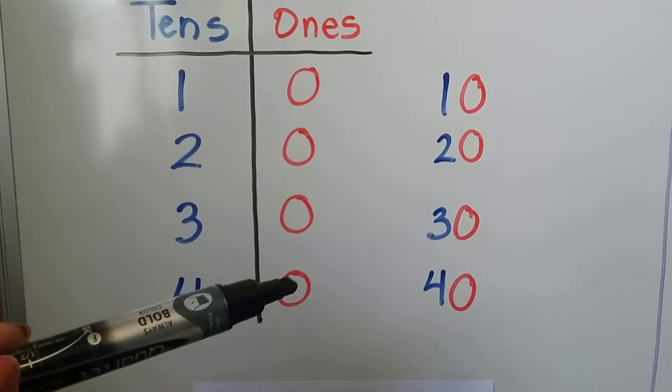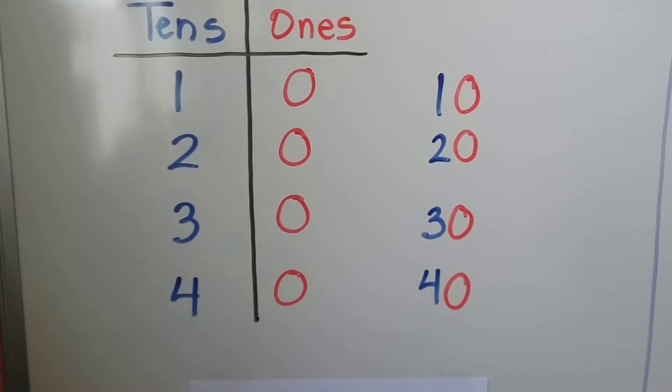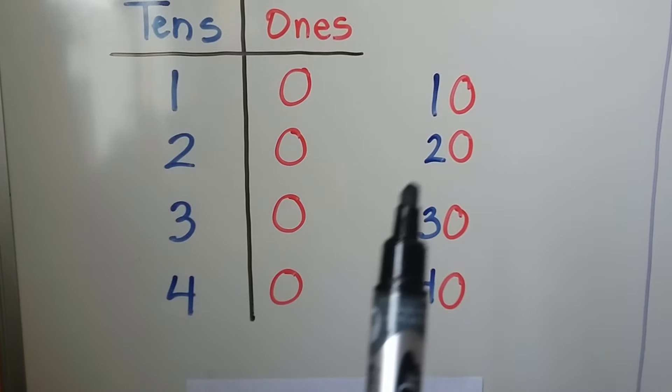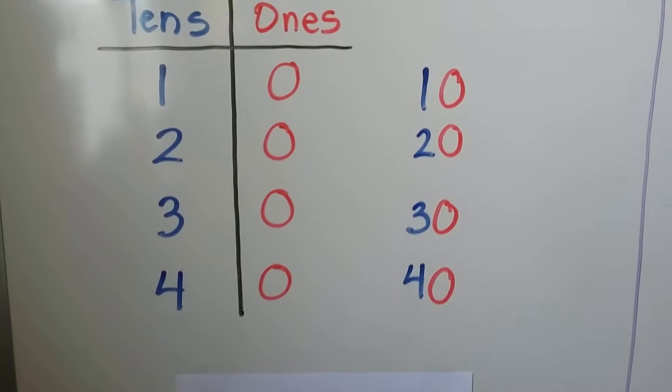The number in the ones place stays the same. We have 10, 20, 30, 40.